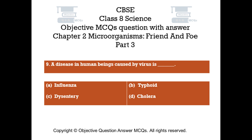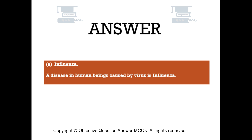Question number 9. A disease in human beings caused by viruses is — Option A: Influenza. Option B: Typhoid. Option C: Dysentery. Option D: Cholera. The right answer is option A — Influenza. A disease in human beings caused by a virus is influenza.